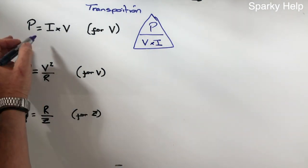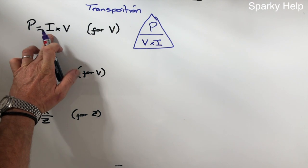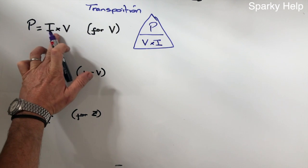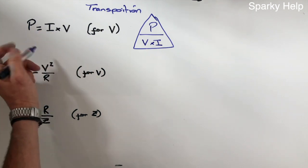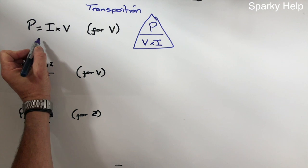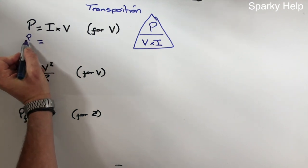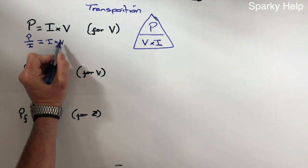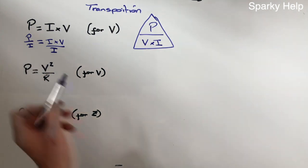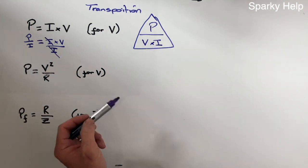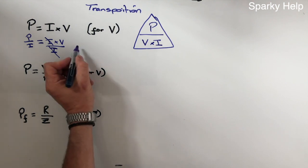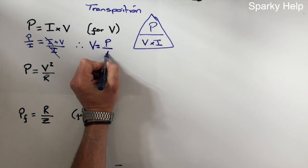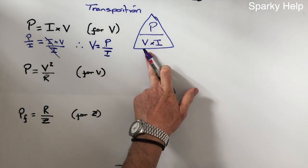How does that basically work? Well, we want to find V. I is multiplying, so to get I over the other side, currently it's timesing, so to get it over the other side it becomes a divide. So you divide each side by I, and if we divide like that, then they cancel out. And what you're left with is power divided by I, as per triangle.